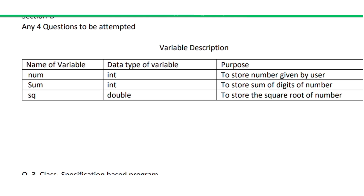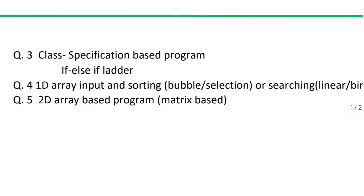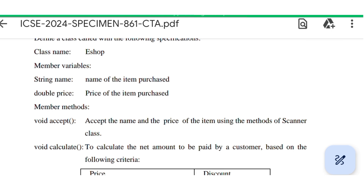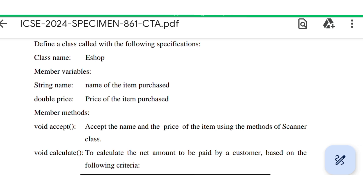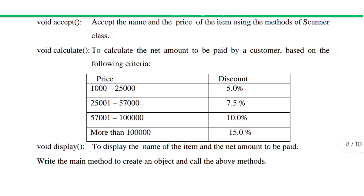There are some changes in the pattern, so let's discuss what kind of questions will come and how to select the best four questions. The first question of Section B is Question 3, which will be based on class specification — the detail of the class will be given including class name, number of variables, and methods. It will be based on if-else if ladder with certain criteria. This is the easiest program to attempt, and we may need to write the main method and create an object depending on the question.